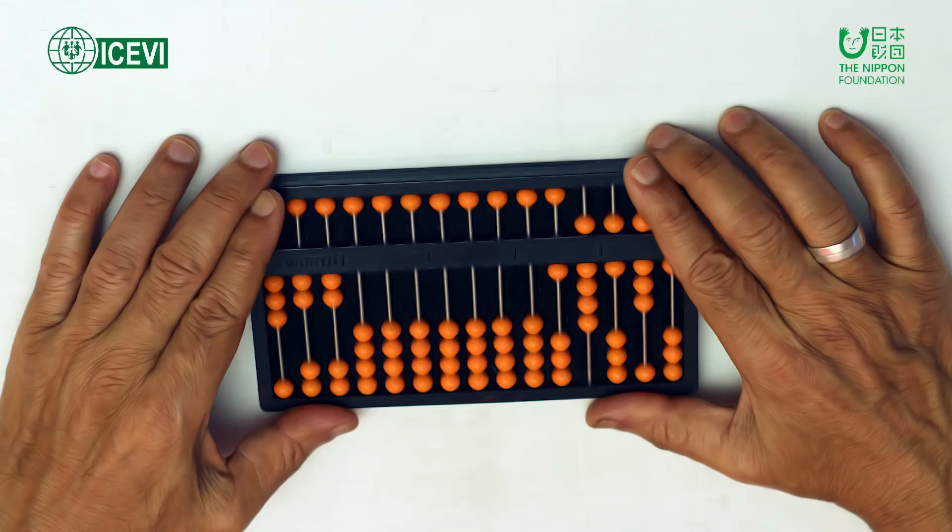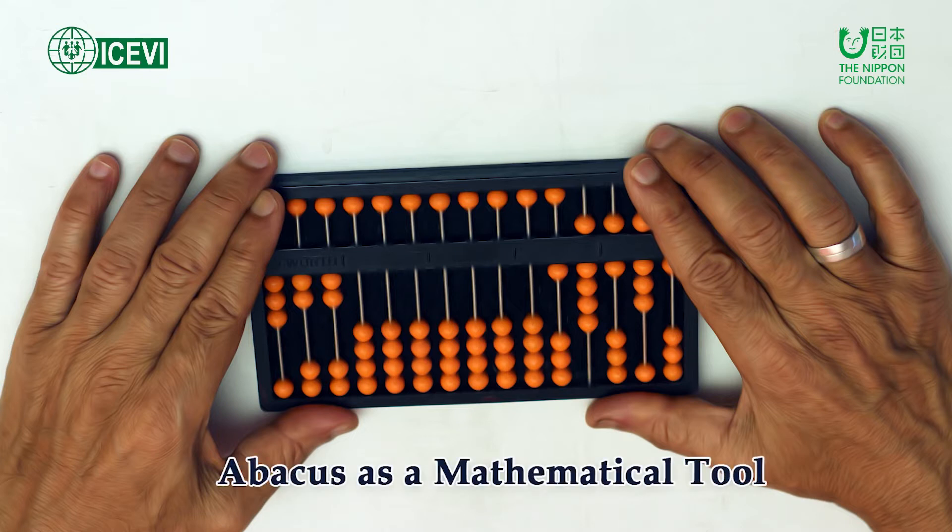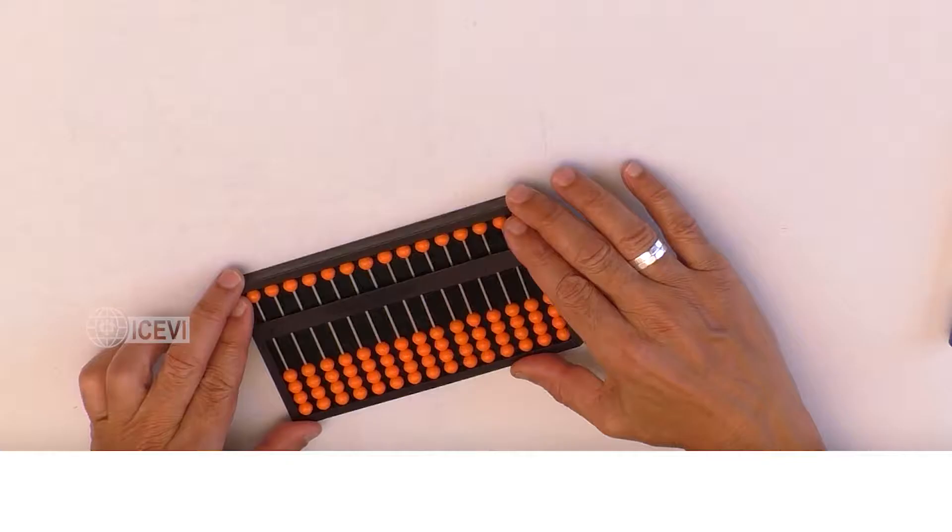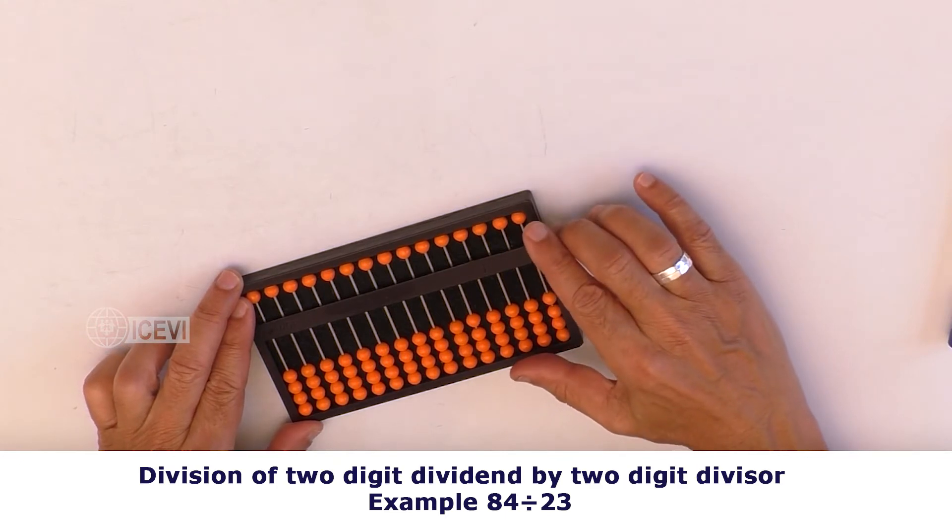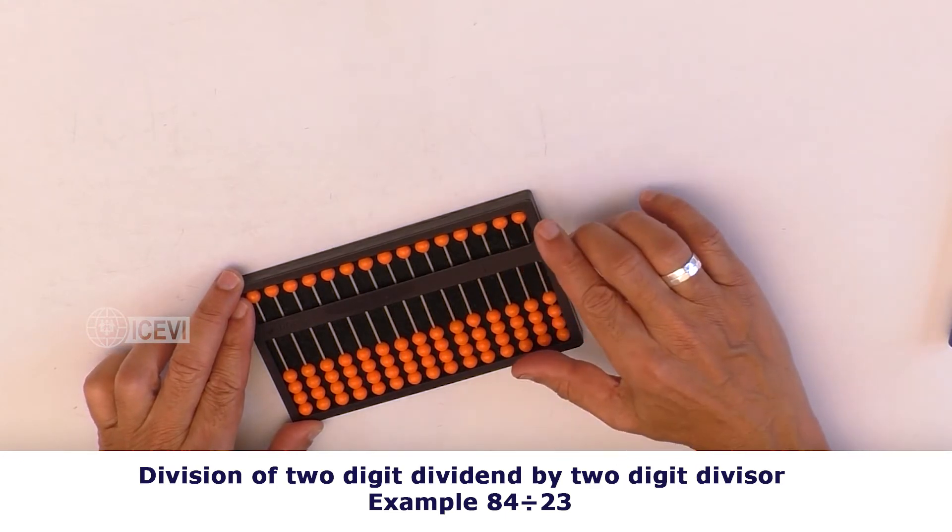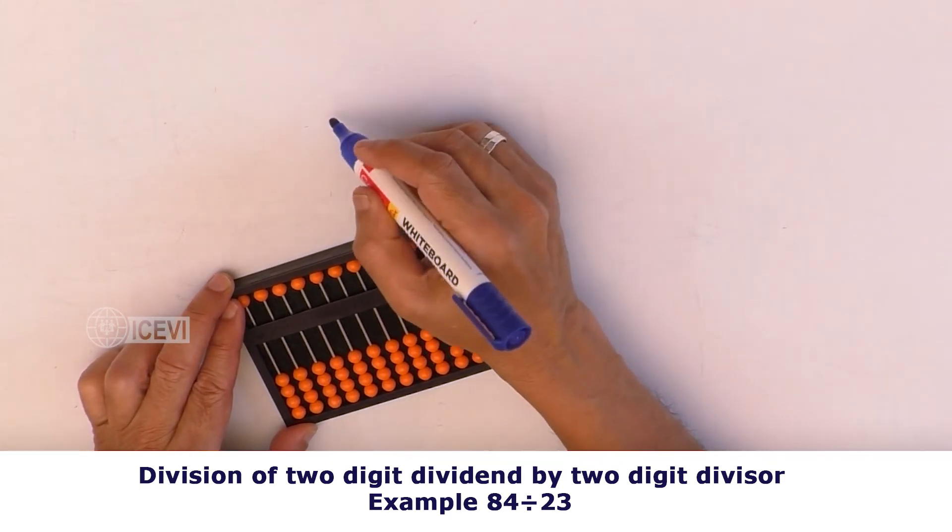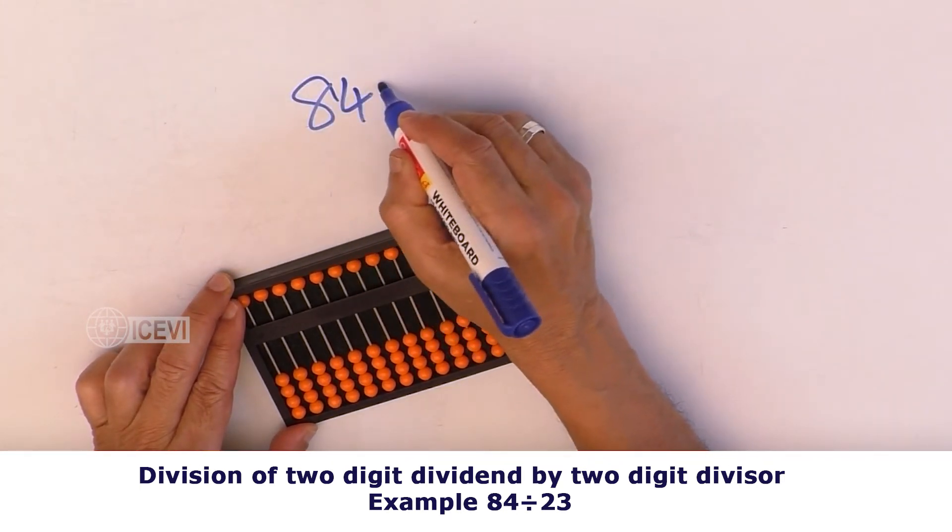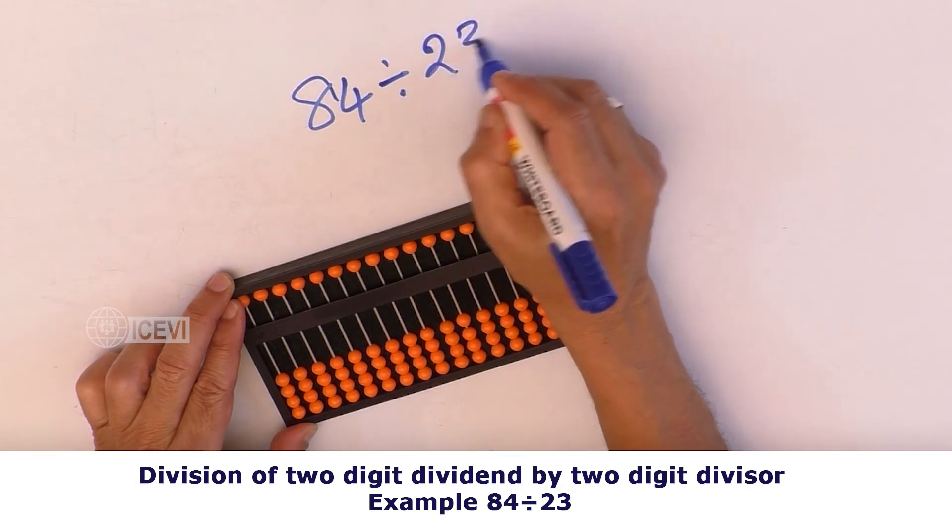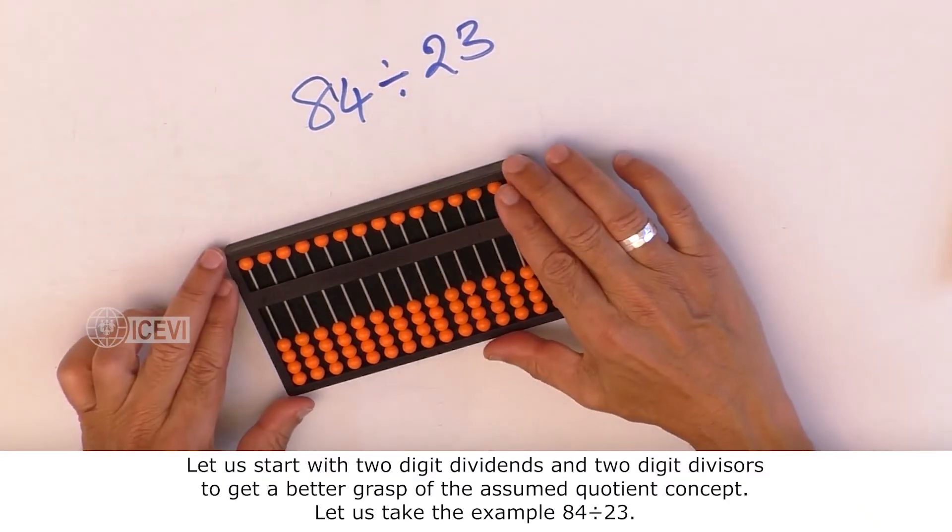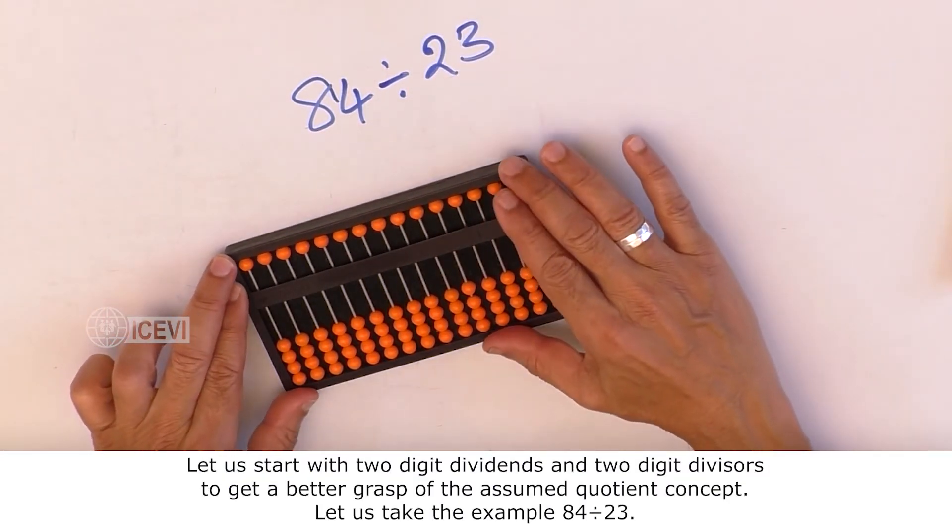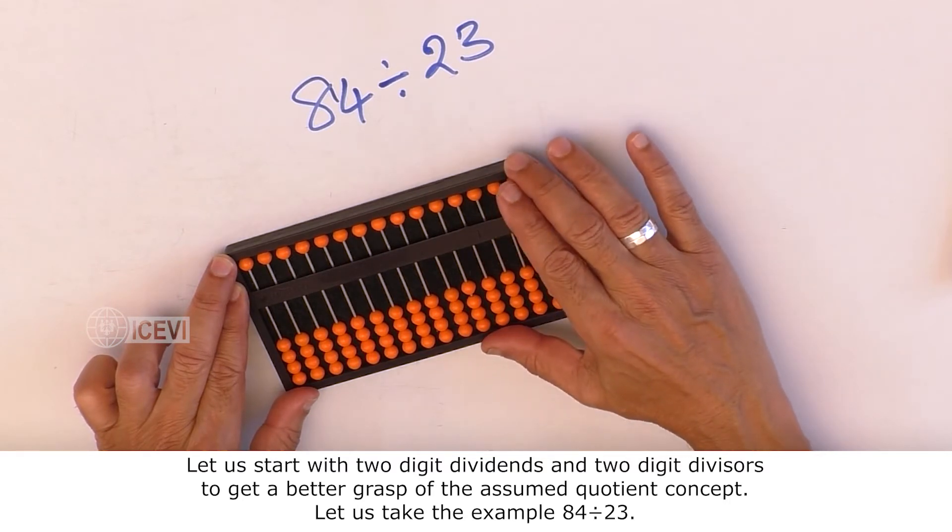The Nippon Foundation Mathematics Package for Teachers Video Series: Abacus as a Mathematical Tool. Title of the video: Division of Two-Digit Dividend by Two-Digit Divisor, Example 84 divided by 23. Let us start with two-digit dividends and two-digit divisors to get a better grasp of the assumed quotient concept.